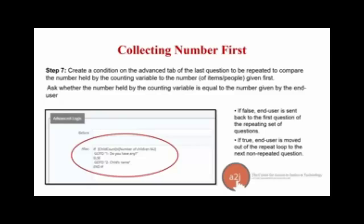Step seven: create a condition on the advanced section of the last question to be repeated, comparing the counting variable to the number given by the end user. If false, the end user is sent back to the first question of the repeating set. If true, they are moved out of the loop to the next non-repeated question. The logic reads: if child count equals number of children, go to the next set; else go back to child's name. Make sure to put variables in brackets, with a hard return between each command, and always include an end-if.